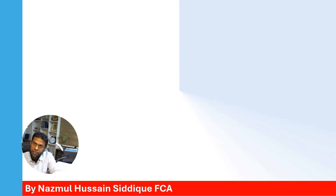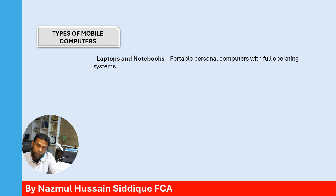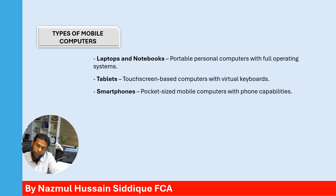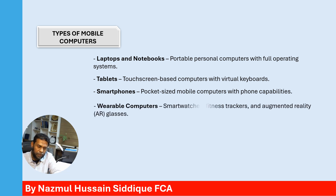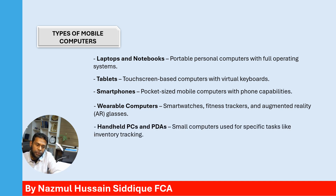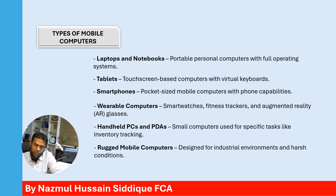The types of mobile computers. Number one, laptops and notebooks — portable personal computers with full operating systems. Tablets — touch-screen-based computers with virtual keyboards. Smartphones — pocket-sized mobile computers with phone capabilities. Wearable computers — smartwatches, fitness trackers and augmented reality glasses. Handheld PCs and PDAs — small computers used for specific tasks like inventory checking. Rugged mobile computers — designed for industrial environments and harsh conditions.